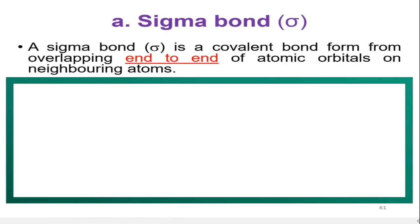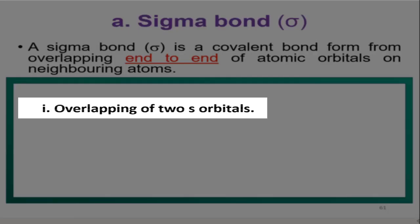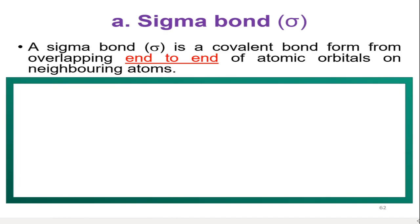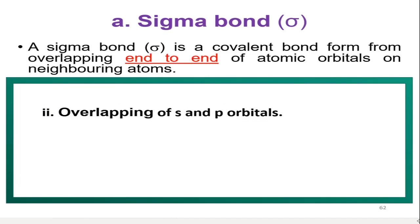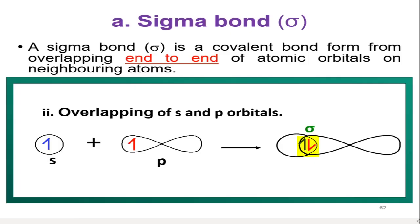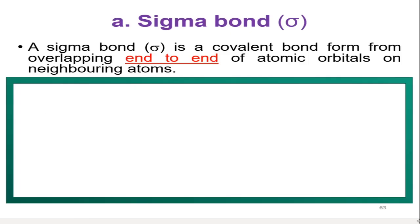A sigma bond is a covalent bond resulting from end-to-end overlap. All single bonds are sigma bonds. There are three simple overlaps that result in a sigma bond: first, overlapping of two s orbitals; second, overlapping of one s orbital with one p orbital; third, overlapping of two p orbitals.